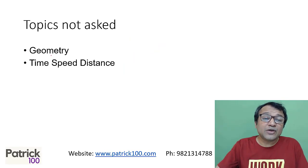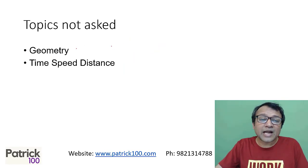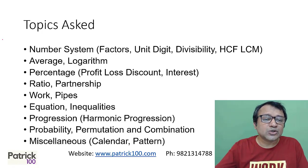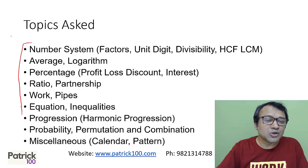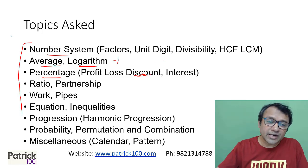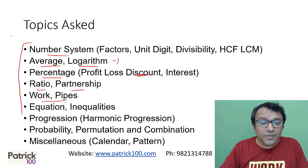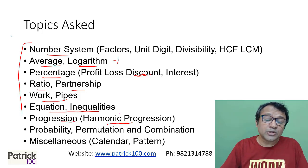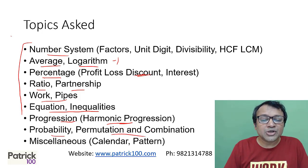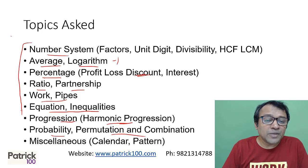As far as topics are concerned, time-speed-distance and geometry are not in NMAT. The main topics to focus on are: number system, average, logs — normally one question each. Percentage, specifically discount questions, ratio and partnership, work and pipes, equations and inequalities, and progressions — specifically harmonic progression, because that is not in CAT but it does come in NMAT. The simple harmonic progression, not any complicated one. Also probability and permutation and combination. These are the major topics you need to focus on.